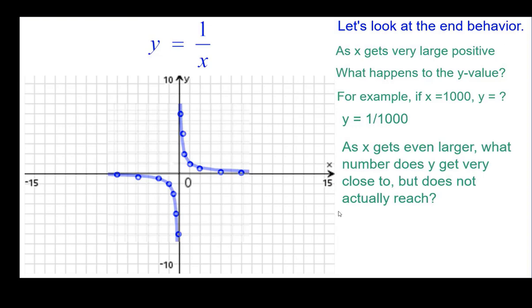And as x gets even larger than a thousand, what number does y get really, really close to but does not actually reach? And that number, of course, is zero, very close to zero. But keep in mind that it's always positive. So how we show that on the graph is we have this curve almost becoming like a line really close to the x-axis but never ever touching it.